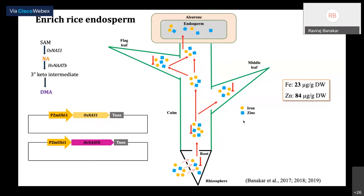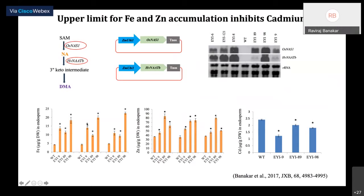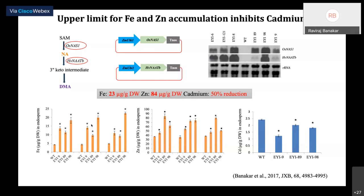We then investigated whether we could push even more iron and zinc into the endosperm beyond 23 and 84 micrograms. What we found was that there is an upper limit for how much iron and zinc we can put in the seed in the cultivar we were using — though these numbers may differ from cultivar to cultivar or crop to crop. Interestingly, when we increased iron and zinc concentration in the endosperm, we observed a 50% reduction in cadmium levels — so we have a rice that has higher essential nutrients and lower toxic compounds.